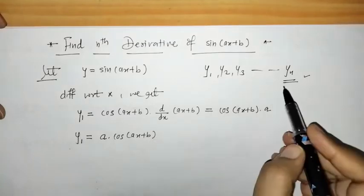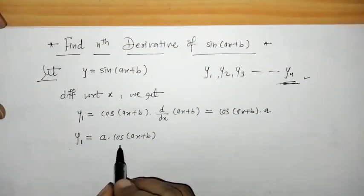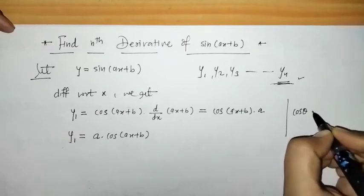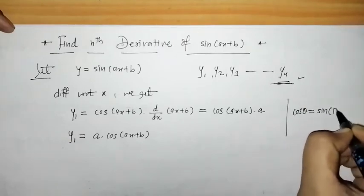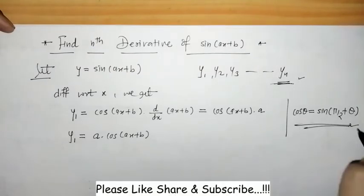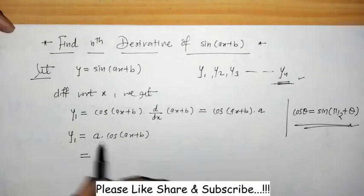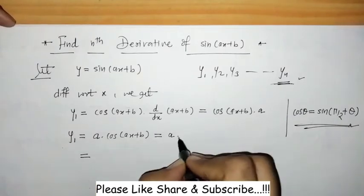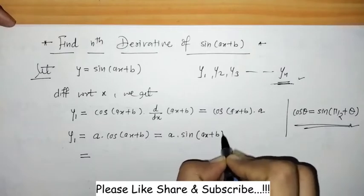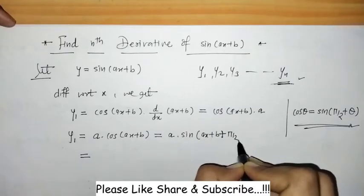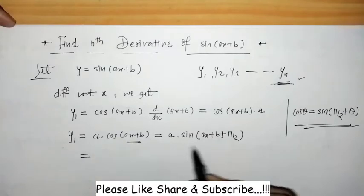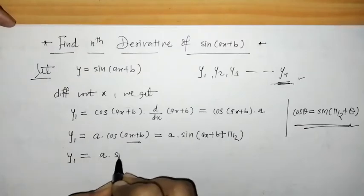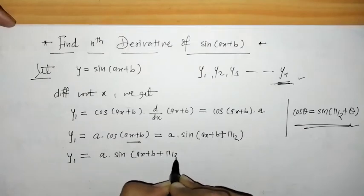To make a generalization for yn, we write cosine in terms of sine using the identity: cos θ = sin(π/2 + θ). Using this identity we can write y1 = a·sin(ax + b + π/2), treating (ax + b) as θ. So y1 = a·sin(ax + b + π/2).